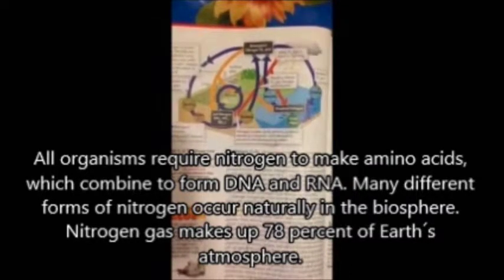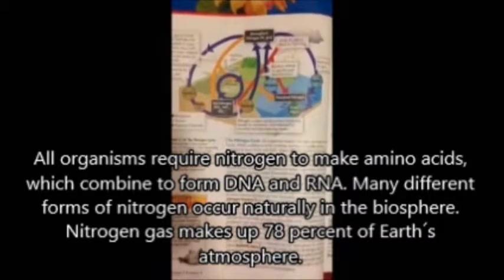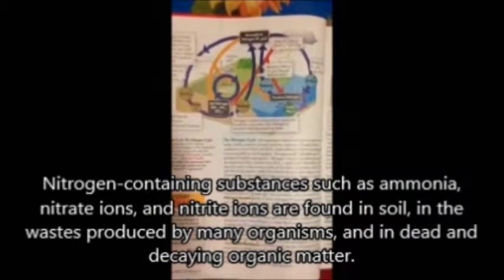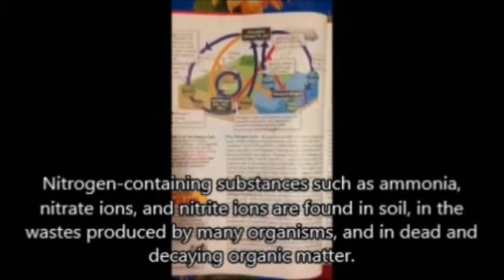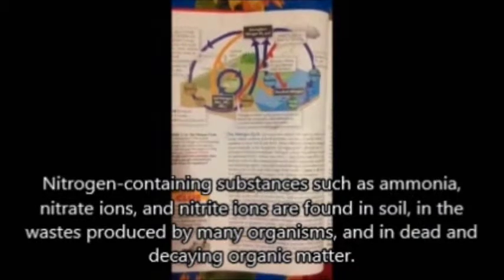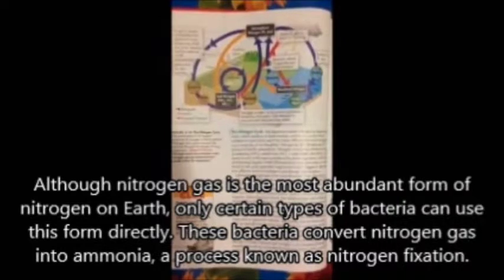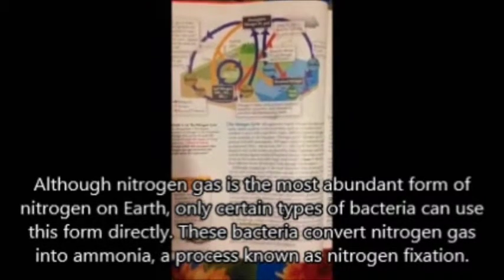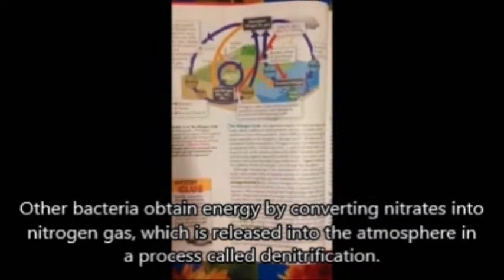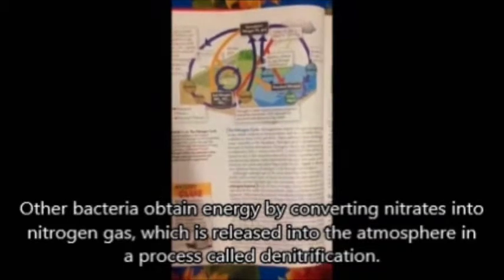Many different forms of nitrogen occur naturally in the biosphere. Nitrogen gas makes up 78% of Earth's atmosphere. Nitrogen-containing substances such as ammonia, nitrate ions, and nitrite ions are found in soil. Nitrogen gas is the most important source of nitrogen. Only certain kinds of bacteria can convert nitrogen gas into usable forms. While some bacteria obtain energy by converting nitrates into nitrogen gas, which is released into the atmosphere in a process called denitrification.